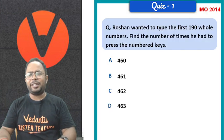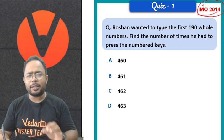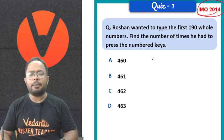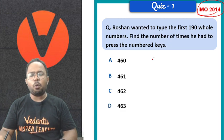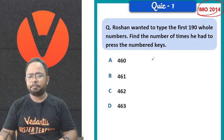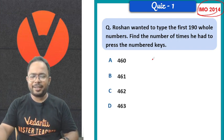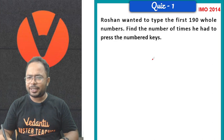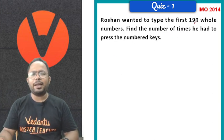So first question on your screen, here it is, of your IMO 2014. This is a very interesting question. Roshan wanted to type the first 190 whole numbers. Find the number of times he had to press the numbered keys. How many times he had to press the numbered keys?